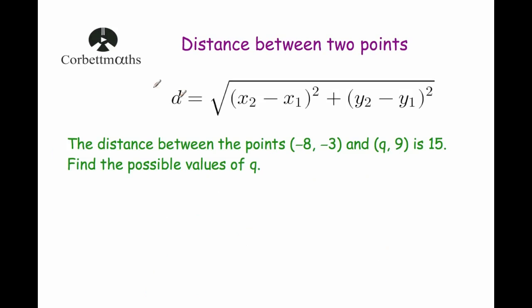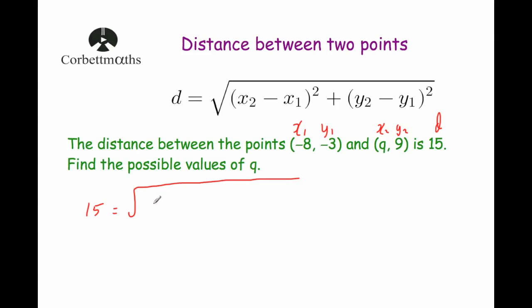Let's have a look at our second example. The distance between the points minus 8, minus 3 and q, 9 is equal to 15. In this question we've been given the distance and we need to work out the possible values for q. So we're going to label the points x1y1 and x2y2, with d equal to 15.